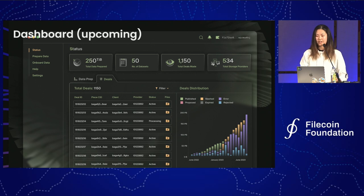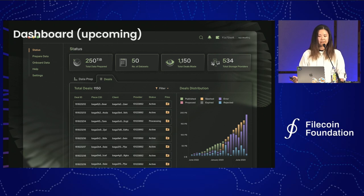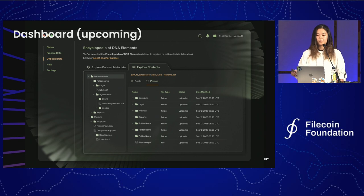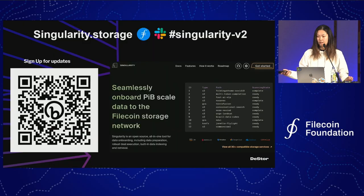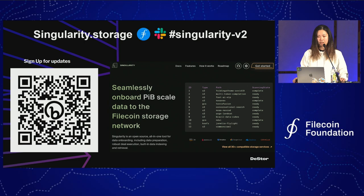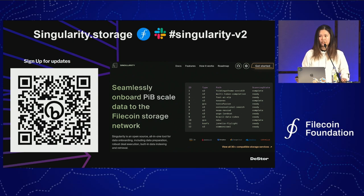This is an upcoming dashboard my team is working on. It lets you monitor your data onboarding progress—where your deals are distributed, the status of each deal, which storage providers you're working with, and more. It also has an explorer that lets you see a snapshot of your dataset and the file system. For any questions, go to the Filecoin Slack, Singularity-V2 channel, and check out the QR code for Singularity.Storage, our website. We just shipped it and there's a bunch of information there.